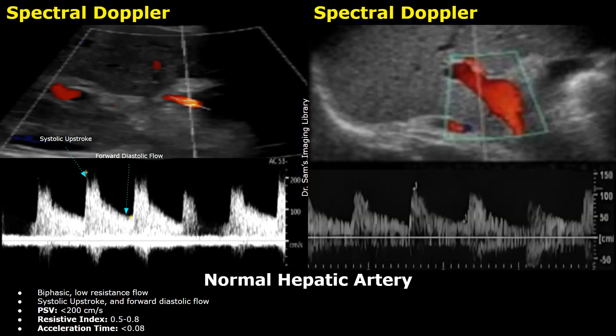Hello everyone, this is Dr. Sam and this video is about hepatic artery Doppler ultrasound. Hepatic artery Doppler ultrasound is useful in liver transplantation evaluation. It is used in post-transplant monitoring to assess hepatic artery patency and detect complications such as hepatic artery thrombosis, stenosis, or pseudoaneurysms. It is also performed in severe cases of liver cirrhosis. We will focus on spectral Doppler studies of the hepatic artery.